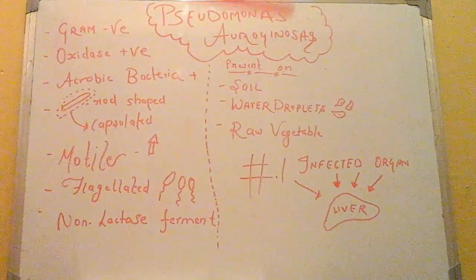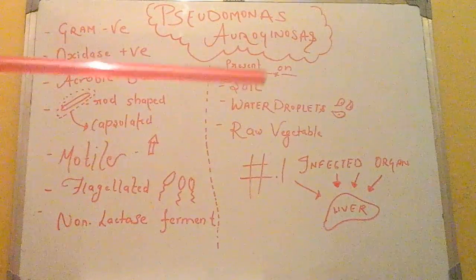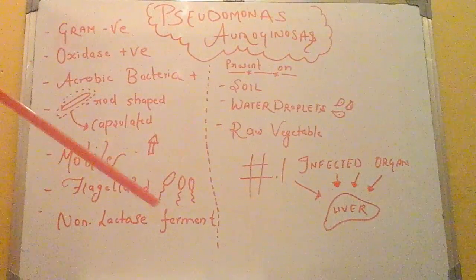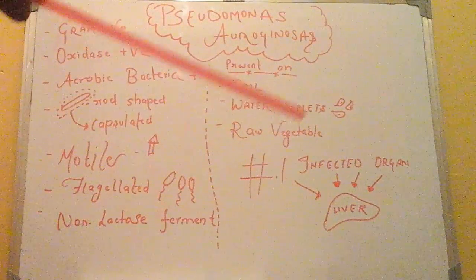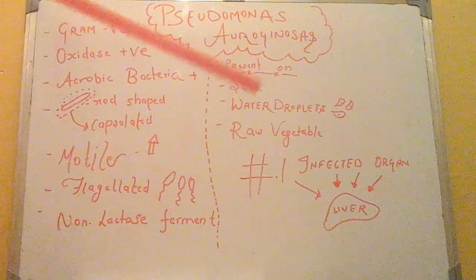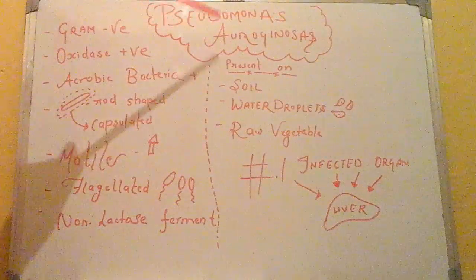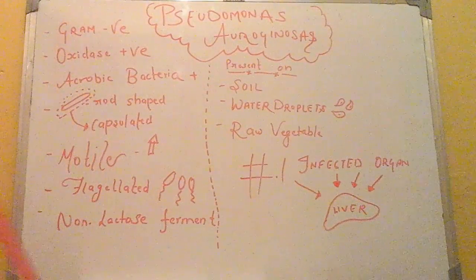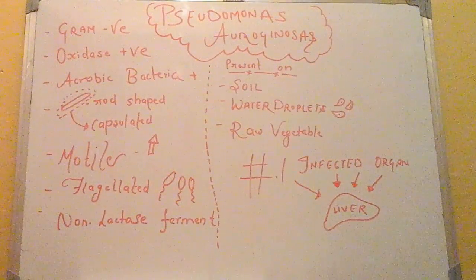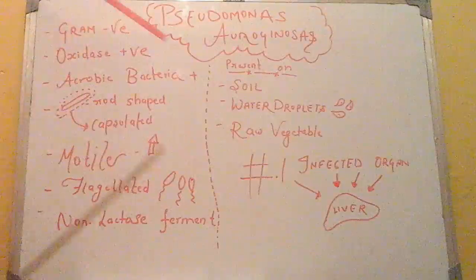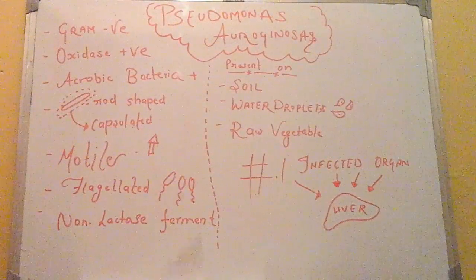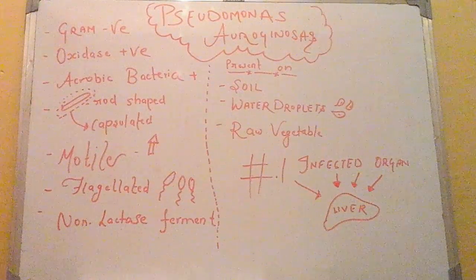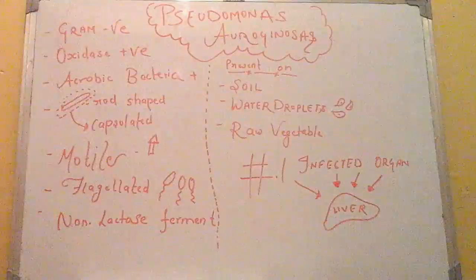In urinary tract infections, patients who have a past history of catheterization are most affected by Pseudomonas aeruginosa. In GI infections, it causes necrotizing enterocolitis.